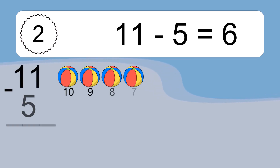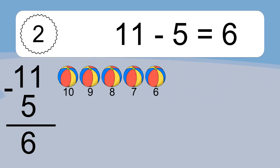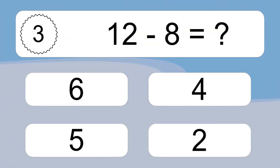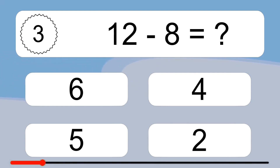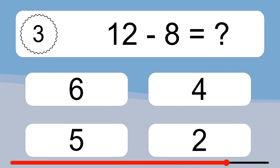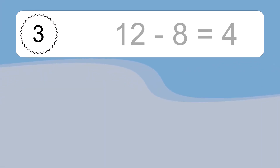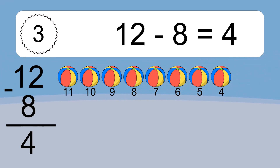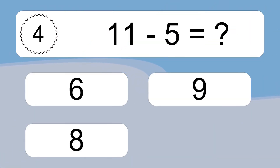11 minus 5 equals 6. Let's count it: 10, 9, 8, 7, 6. 12 minus 8 equals what? 12 minus 8 equals 4. Let's count it: 11, 10, 9, 8, 7, 6, 5, 4. 11 minus 5 equals what?